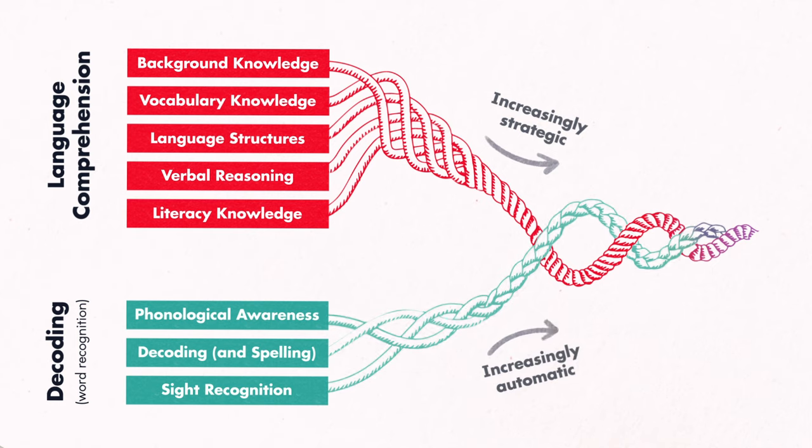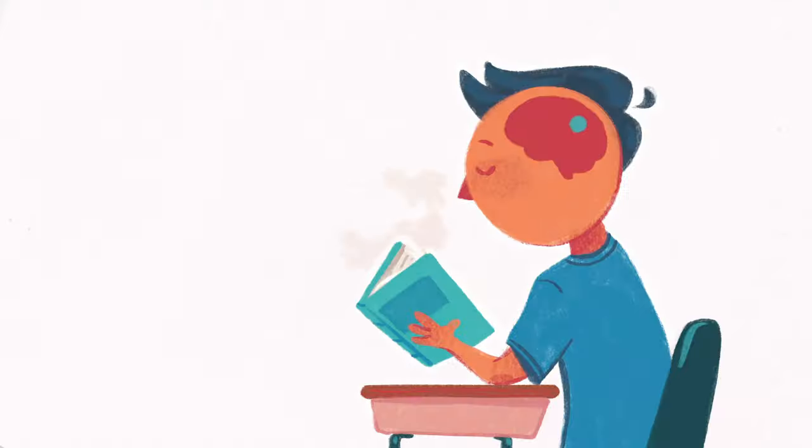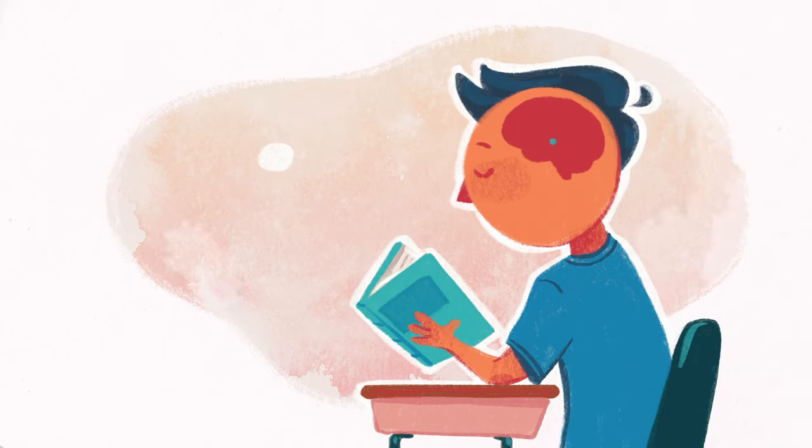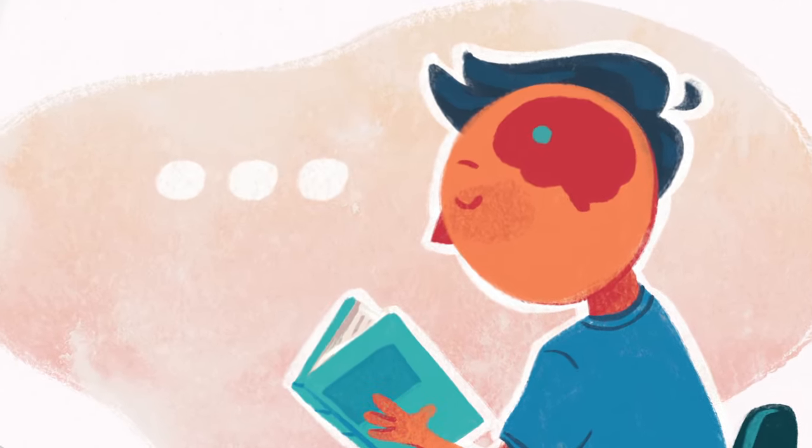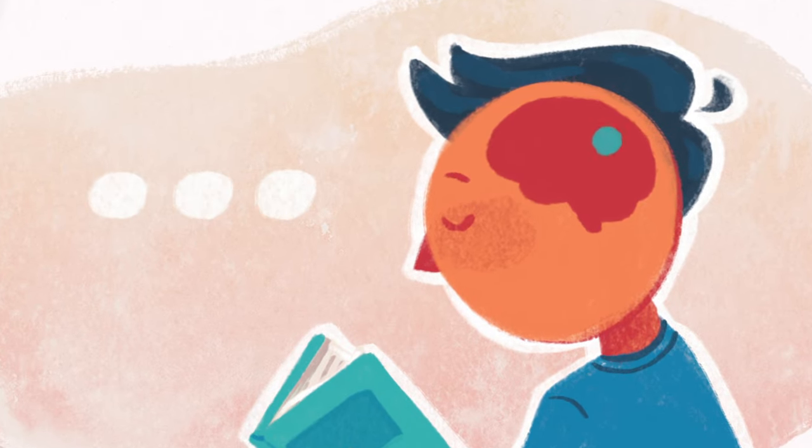With increasingly strategic and increasingly automatic reading, skilled reading occurs and the reader can comprehend text. Skilled reading appears to be effortless, but a skilled reader has fortified the subskills of the reading rope in order to manage the skills simultaneously and automatically, resulting in reading comprehension.